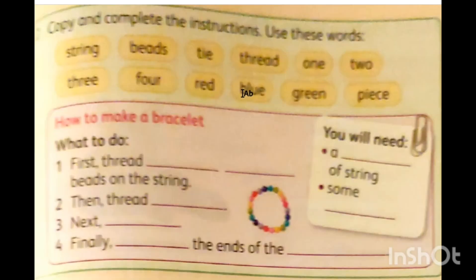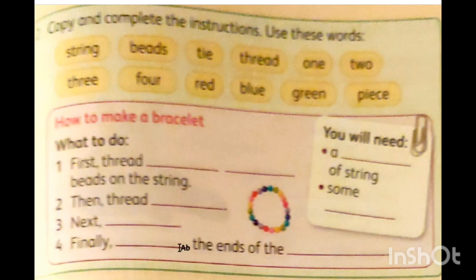Now I will give you homework. Copy and complete the instruction using these words: string, beads, tie, red, blue, green, piece. How to make a bracelet: first thread what and what — we need two nouns. Number two: then thread what. Number three: next what. Finally, what — tie the ends of the what. Choose the suitable words to complete the bracelet instructions. This is the end of our session today. I hope you understood the difference between nouns and bossy verbs and how to make instructions in order to get a final, understood meaning. See you soon and goodbye.